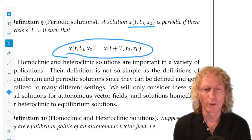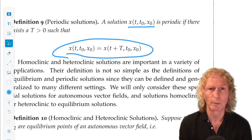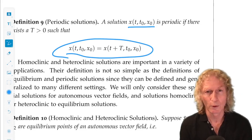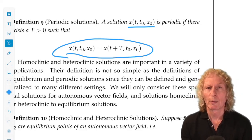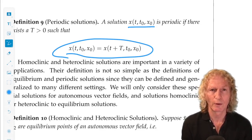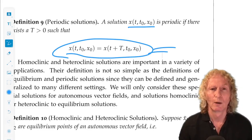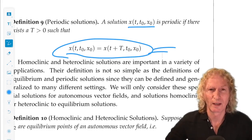Now, if something, if a solution is periodic with period capital T, it's periodic with period capital 2T, 3T, 4T, and so on. When we're talking about periodic solutions in time, we generally restrict ourselves to the smallest period so that this equation or condition is satisfied.